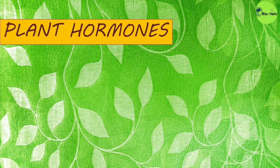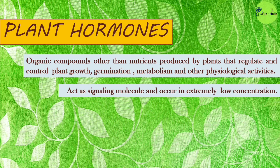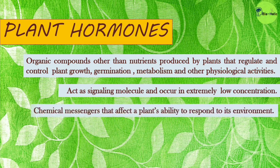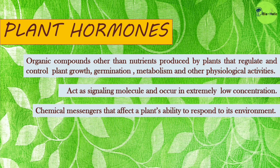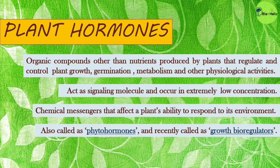So what are plant hormones? Plant hormones are organic compounds, other than nutrients, produced by plants that regulate and control plant growth, germination, metabolism, and other physiological activities. They act as signaling molecules and occur in extremely low concentrations. They are chemical messengers that affect a plant's ability to respond to its environment.